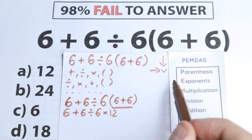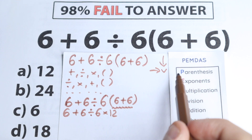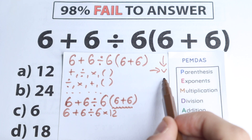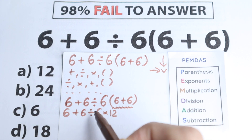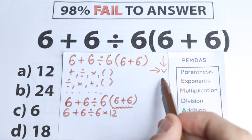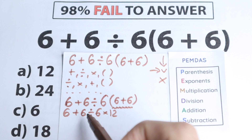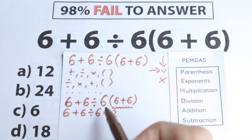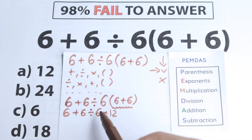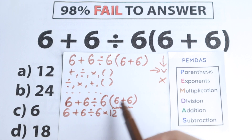Let's go to the next step. The next step according to PEMDAS is exponents, and I would say I don't see any exponents or powers right here — we don't have any cubes or squares — so we just skip this part.